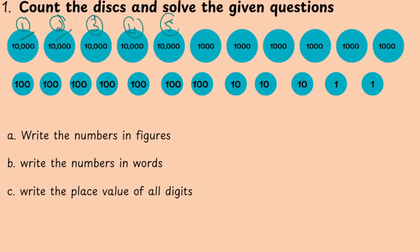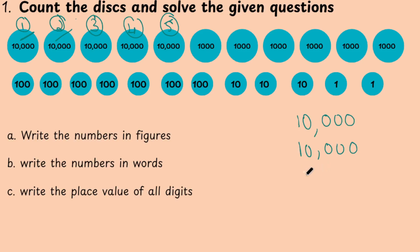4, 5. There are 5 ten-thousands. When there are 4 zeros we call it 10,000; when there are 3 zeros we call it 1,000. So 4 zeros means 10,000. How many 10,000 are there? 5 ten-thousands. So write down all the 10,000s: 1, 2, 3, 4, 5.